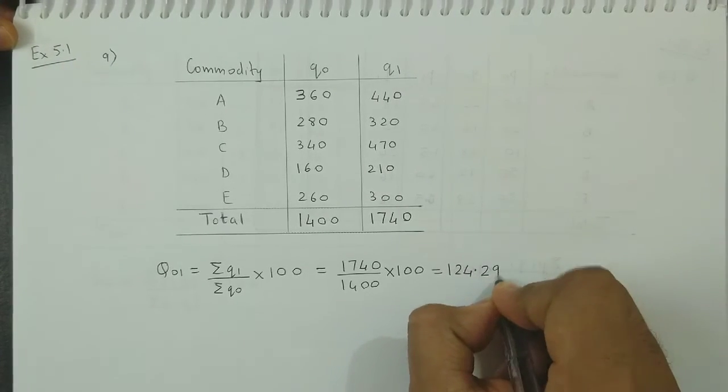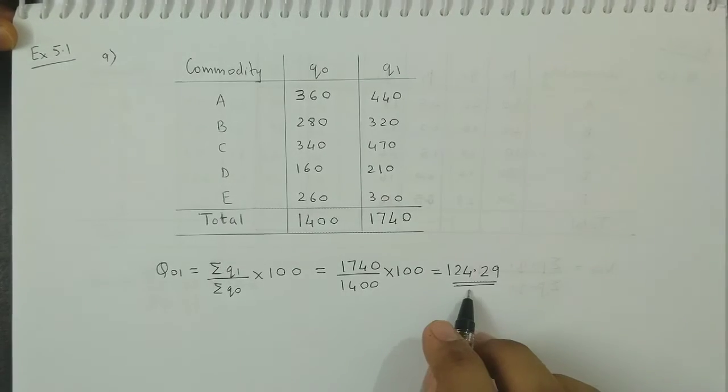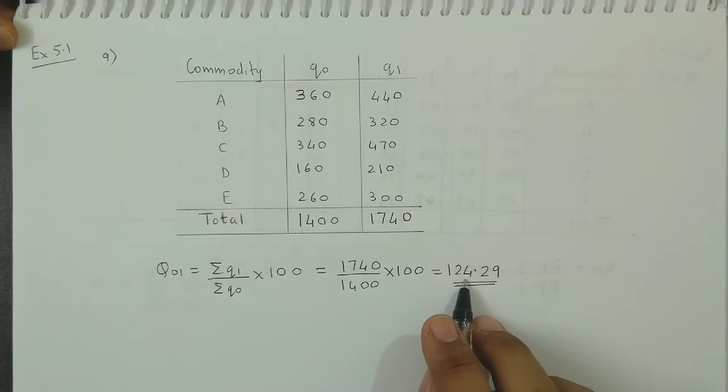So we can round it off as 29. So the required quantity index is 124.29.